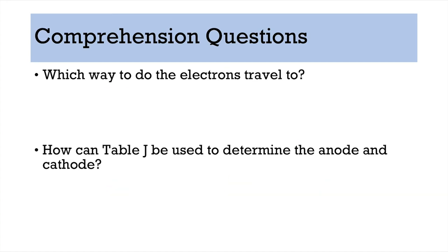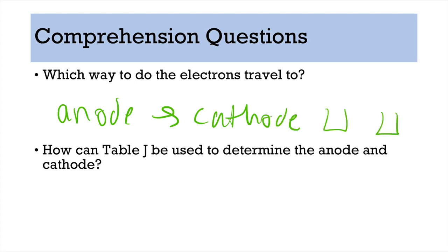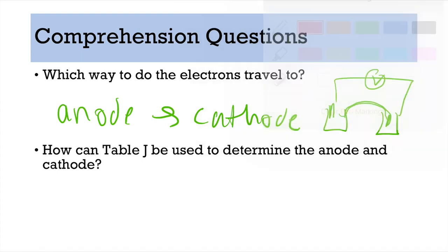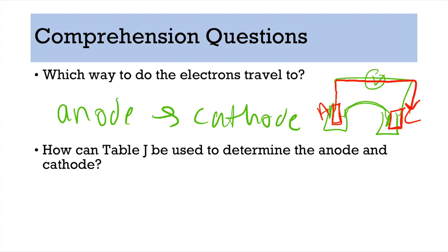Number seven: which way do electrons travel? They travel from the anode to the cathode. In a voltaic cell, electrons travel up the wire from the anode and down to the cathode. They are removed from the anode piece of metal and placed on the cathode piece of metal. That's why the picture showed the anode getting smaller and the cathode getting bigger — you can even think of a 'fat cat' because the cathode just keeps getting bigger and bigger.